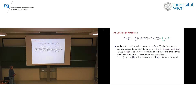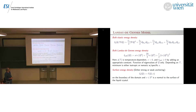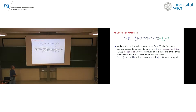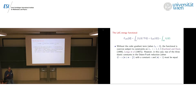The Landau-de Gennes functional has an elastic energy depending on Q and its gradient. The first three terms are quadratic in the gradient, and the third term is quadratic in the gradient but cubic in Q. When L₄ is equal to zero — i.e., the functional is quadratic — subject to appropriate constraints on L₁, L₂, and L₃, one can show this functional is coercive, giving a well-defined mathematical problem.